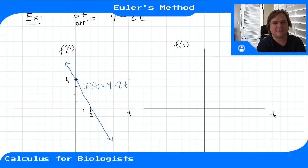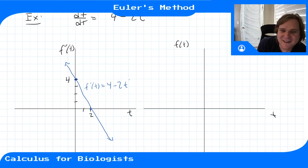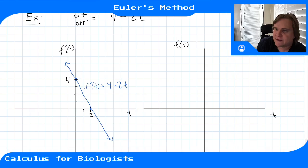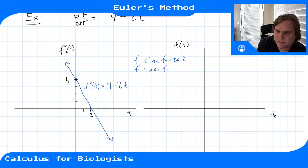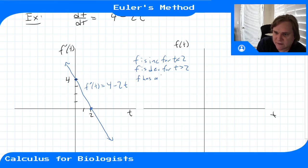This derivative tells us: for t less than 2, f prime is positive, so f is increasing. For t greater than 2, f prime is negative, so f is decreasing. We have zero derivative at t equals 2, going from increasing to decreasing, which means f has a local max at t equals 2.